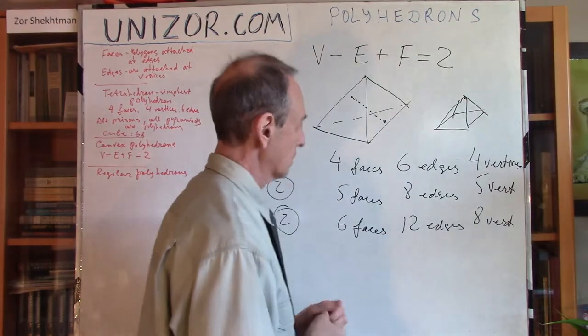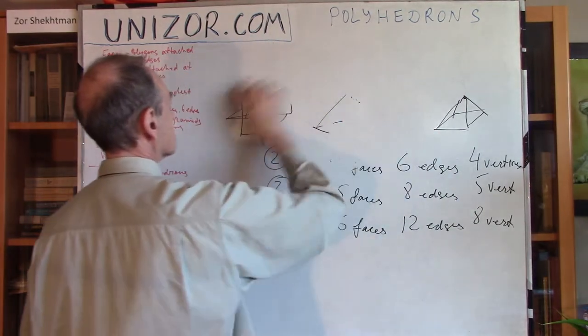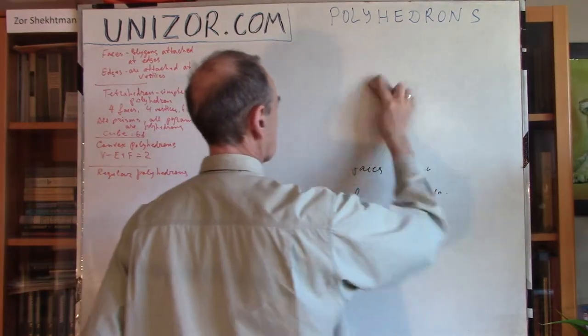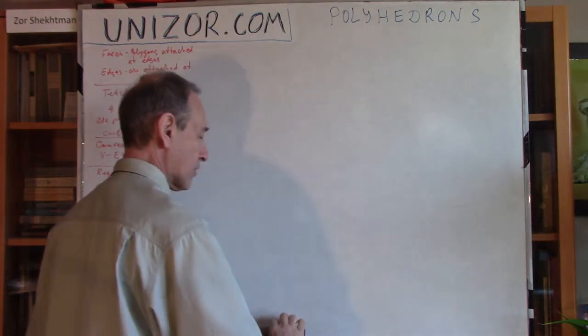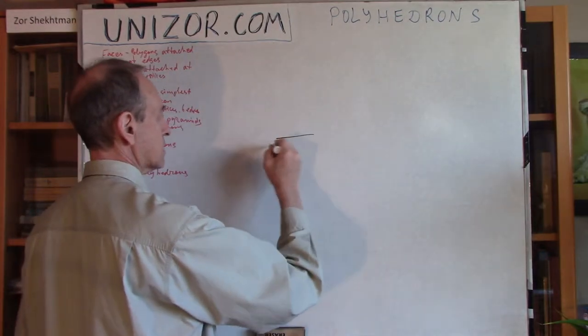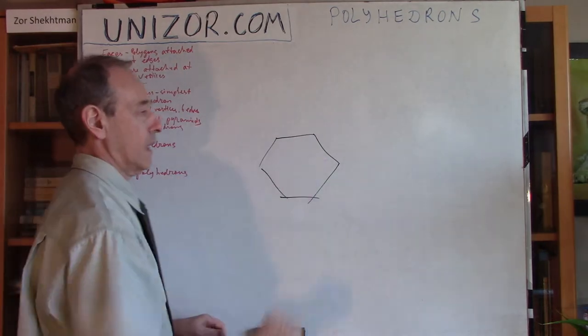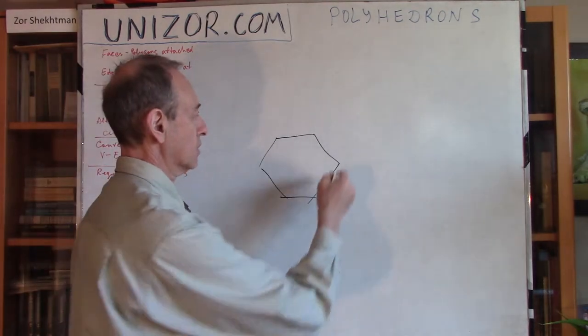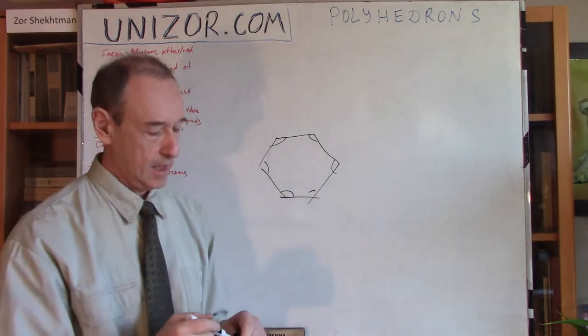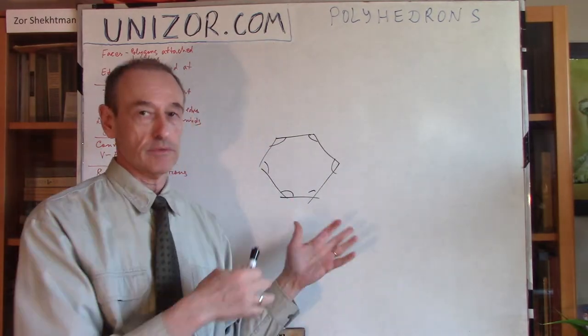And the last but not least I wanted to mention was something which is called a regular polyhedron. Now, you remember what regular polygon is, right? Regular polygon is something which is something like this. All edges are the same and all angles are the same. Well, the same means congruent basically. Now, the regular polyhedron is a 3D equivalent of this.